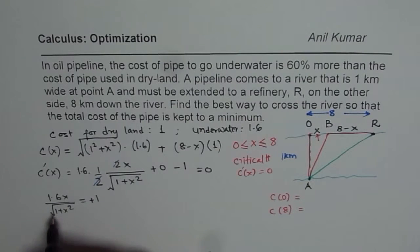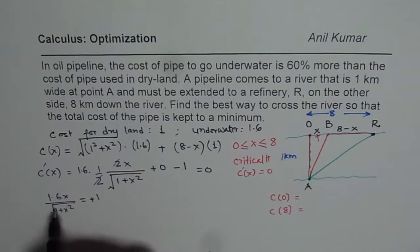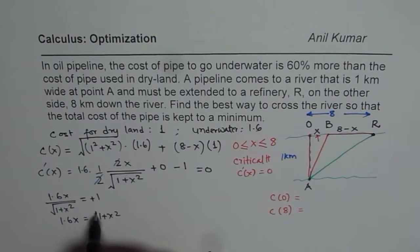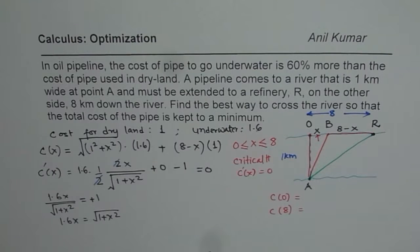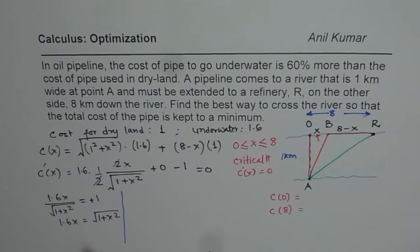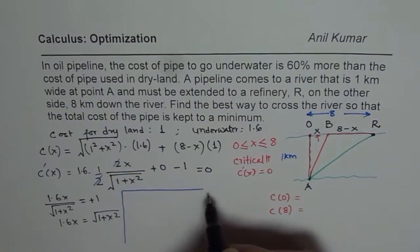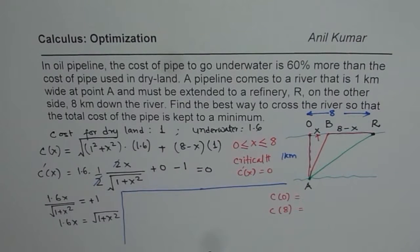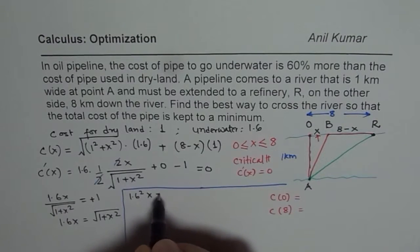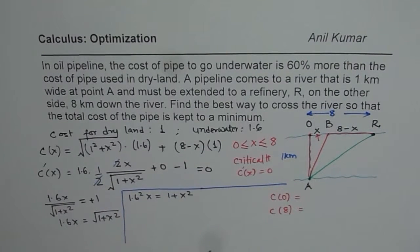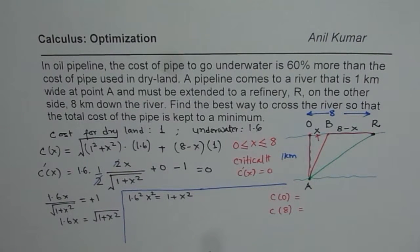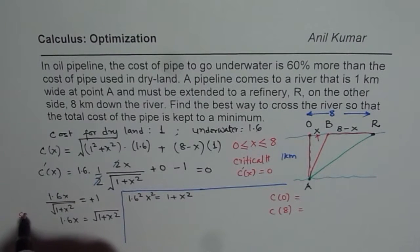To solve this we cross multiply and find x: 1.6x = √(1 + x²). Whenever you have square roots, it is a good idea to square both sides and then solve. When we square both sides, we get 1.6² x² = 1 + x².